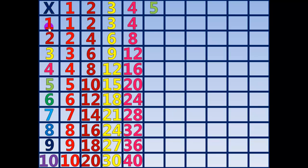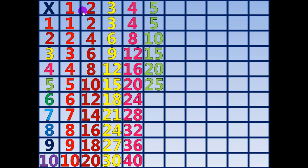5 times 1 equals 5. 5 times 2 equals 10. 5 times 3 equals 15. 5 times 4 equals 20. 5 times 5 equals 25. 5 times 6 equals 30. 5 times 7 equals 35. 5 times 8 equals 40. 5 times 9 equals 45. 5 times 10 equals 50.